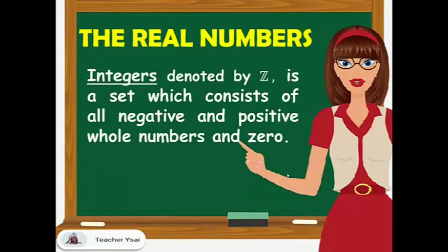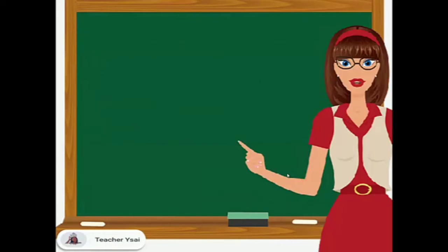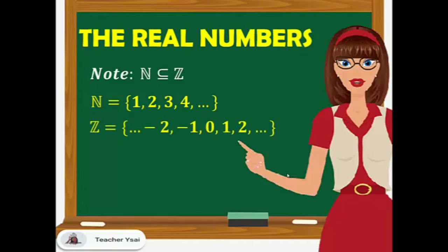Next, we have integers, denoted by the letter-like symbol Z, which is a set consisting of all negative and positive whole numbers and 0. Note that the set of natural numbers is a subset of the set of integers, since the elements for N are 1, 2, 3, 4 up to positive infinity, and the elements for Z include negative 2, negative 1, 0, 1, 2, up to positive infinity. So the set of natural numbers is a subset of the set of integers.